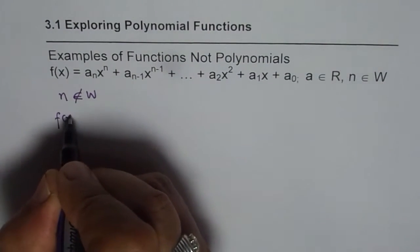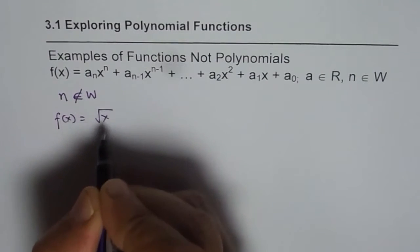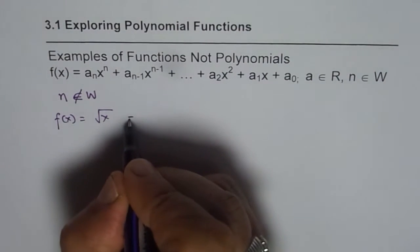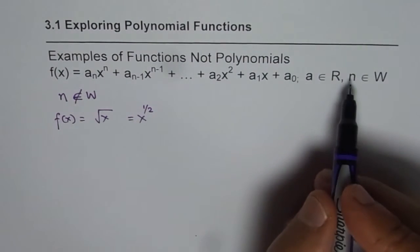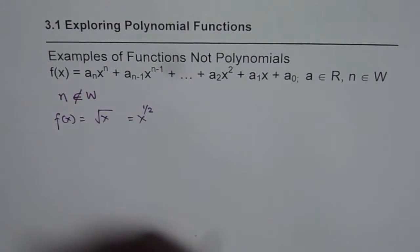For example, if I have a function f(x) equals to square root of x, now this really means that the power of x is half. But the exponent n can only be a whole number, not half. So this is not a polynomial.